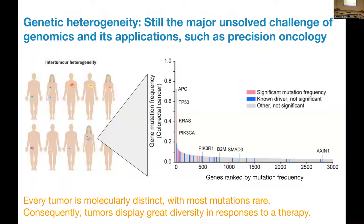This is called a long tail tumor mutation plot, shown here for the Cancer Genome Atlas colorectal cancer cohort with about 500 patients. The four most frequently mutated genes across that cohort are APC, TP53, KRAS, and PIK3CA. But then very quickly, you get into rare gene mutation territory where all of these mutations are observed in fewer than 10% of patients — and then very quickly fewer than 5% of patients. This raises the question of how we treat these thousands of genes in that long tail.